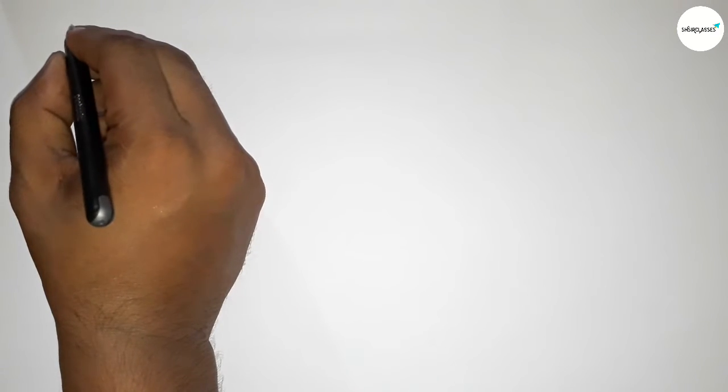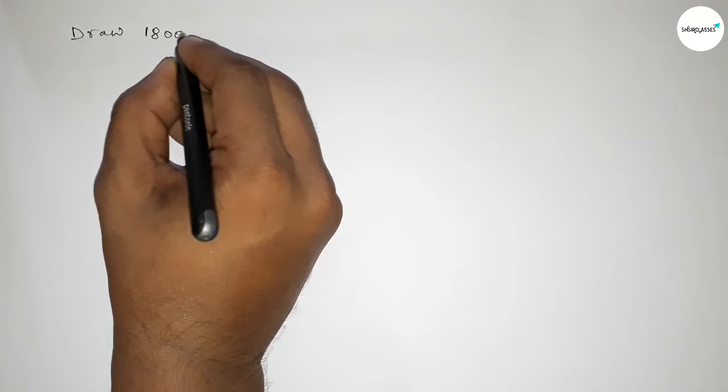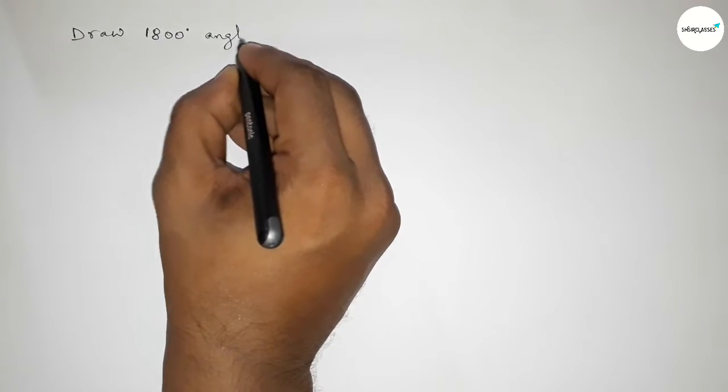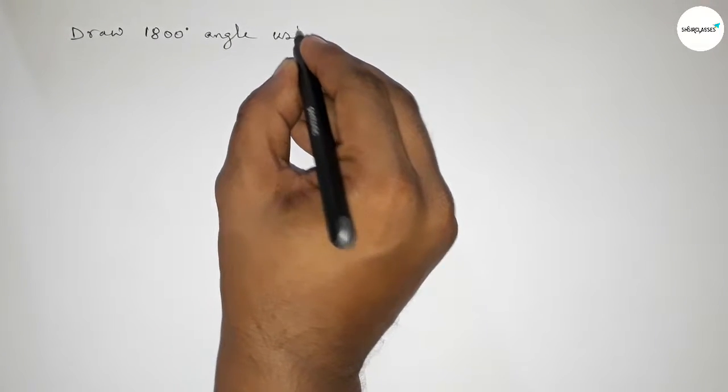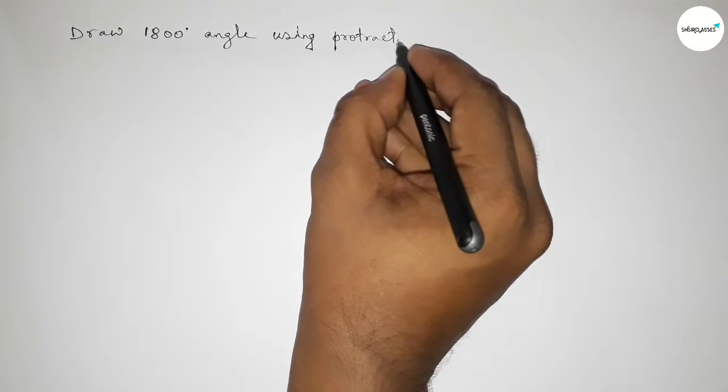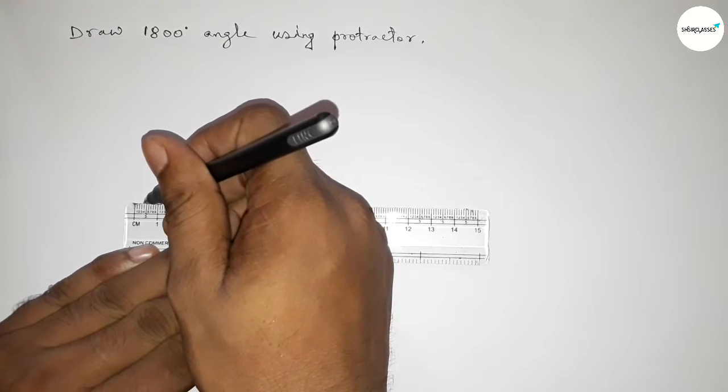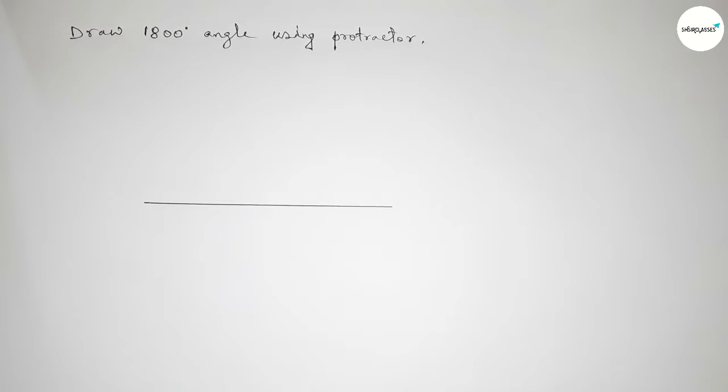Hi everyone, welcome to SSR Classes. Today in this video, we have to draw 1800 degree angle by using protractor. So let's start the video. First of all, we have to draw here a straight line of any length.